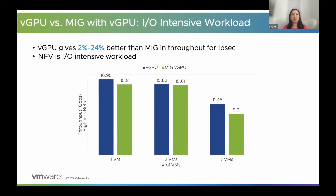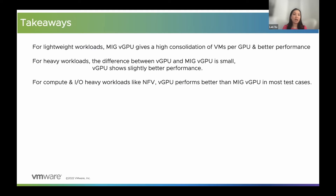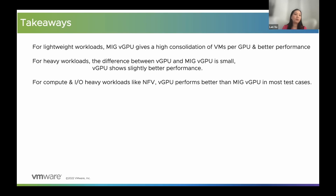So we can see the full spectrum — from MIG being better all the time, to cases where MIG is better in some scenarios and vGPU better in others, and now a case where vGPU is the winner for most tests. Based on our observations, for lightweight workloads, MIG is the better option because it provides better performance when you have more VMs per GPU — higher consolidation and reduced ML AI infrastructure cost. For heavy workloads, the difference is not huge, but vGPU is slightly better. For workloads like network function virtualization — both compute and IO-heavy — vGPU is the way to go. When you don't know your workload's characteristics, we recommend testing with both options and choosing the right one.